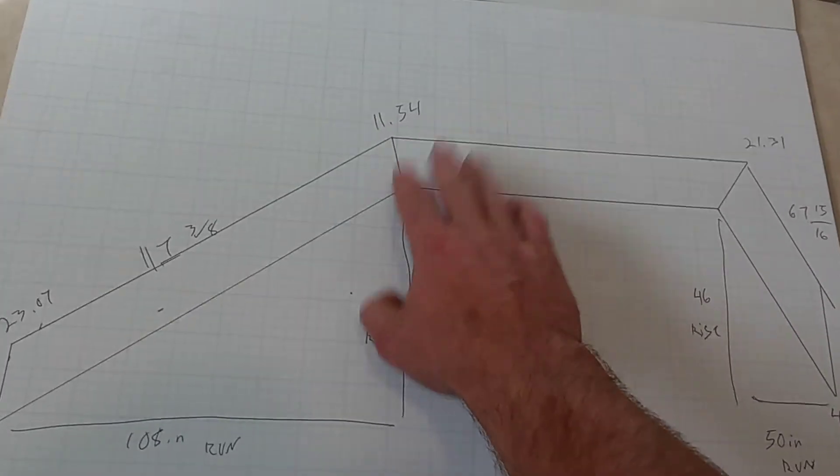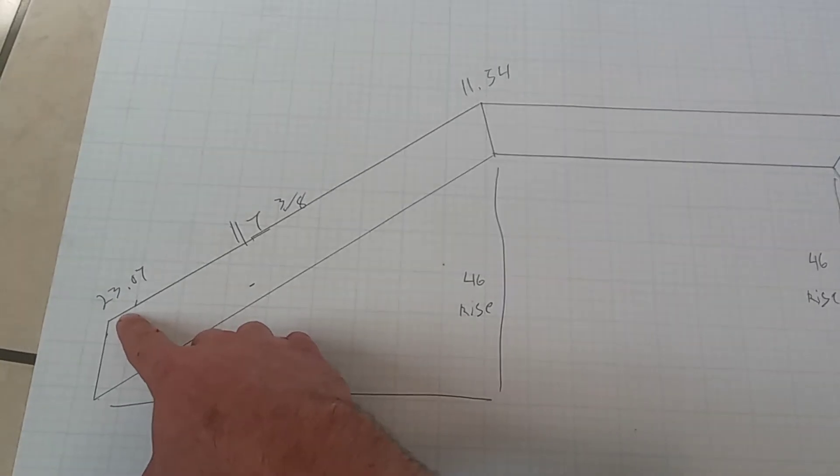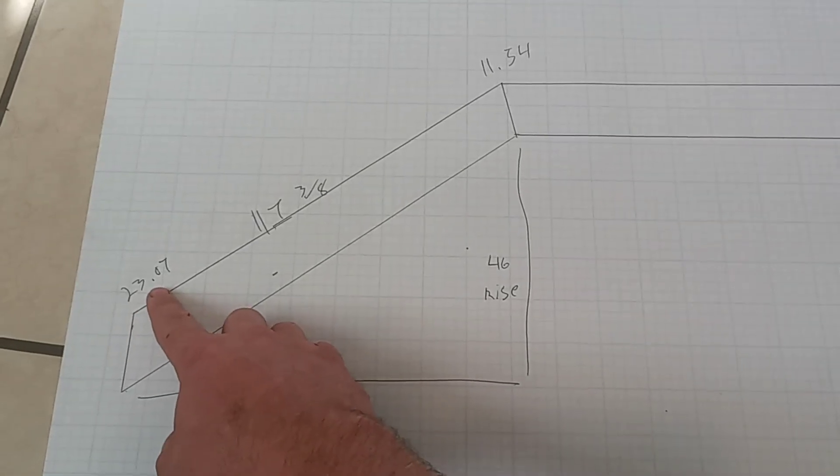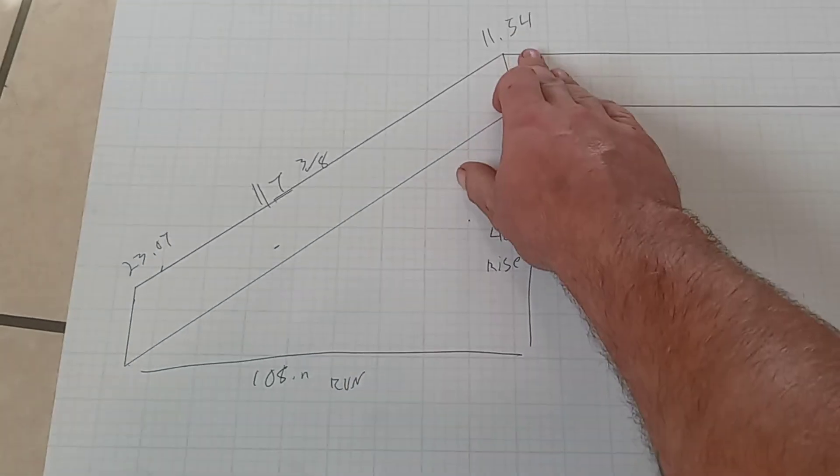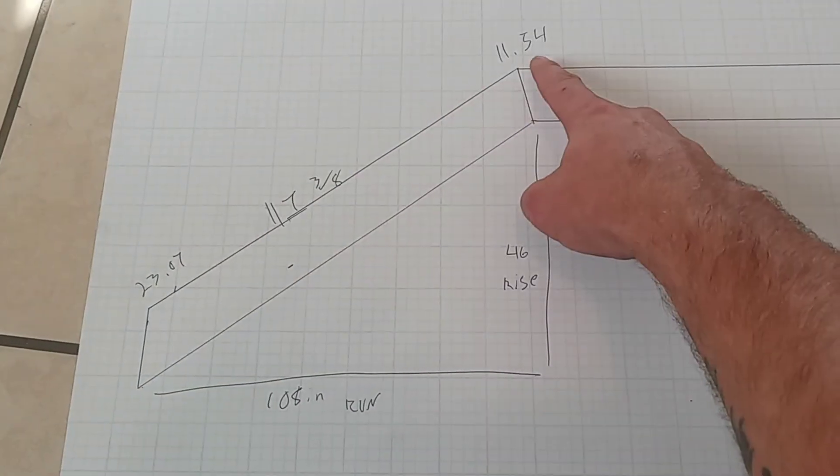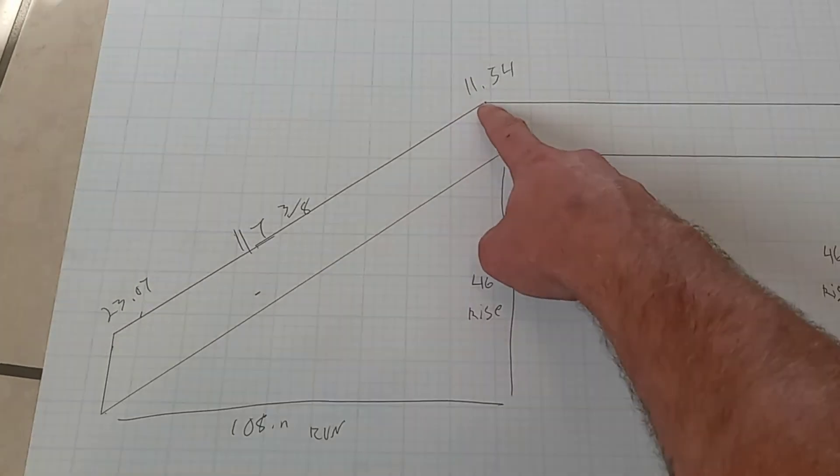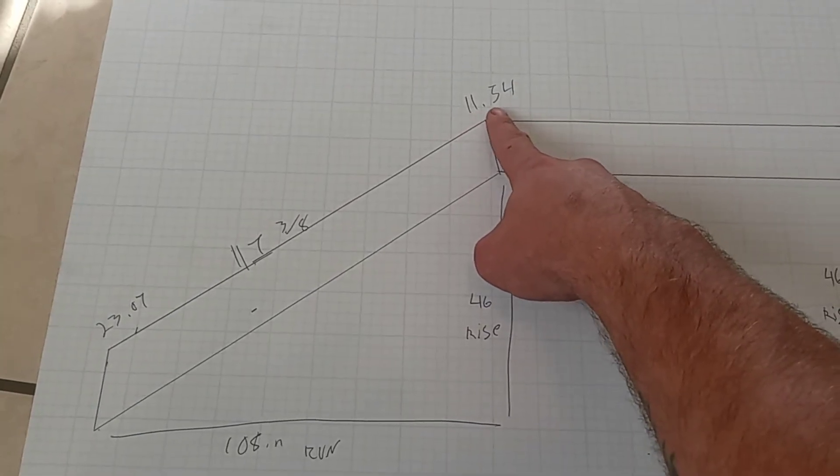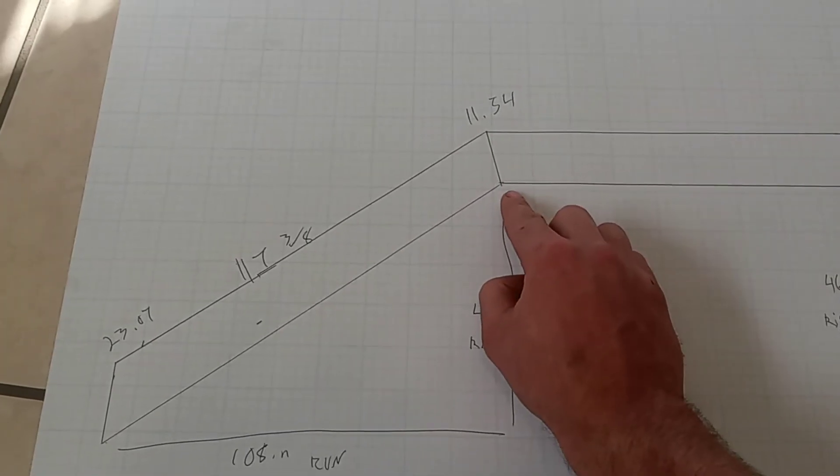Now, in order to obtain the mansard-style roof, this number has to be divided in half. So 23.07 divided by 2 is 11.54. You would hold your tape measure to this point, and run it to this point at 117 and 3 eighths. Make a mark, and on your chop saw, turn it to 11.5, 11 and a half. And then you would make a cut at 11 and a half degrees.